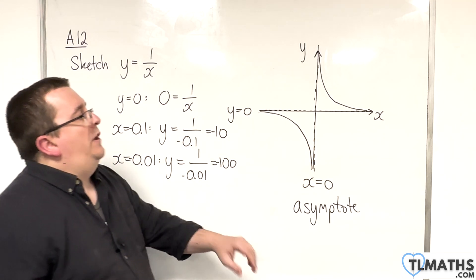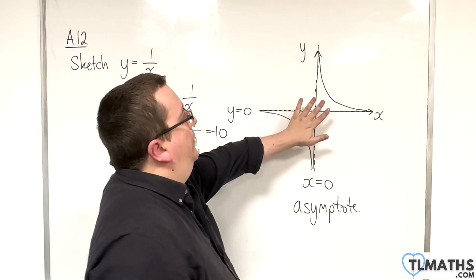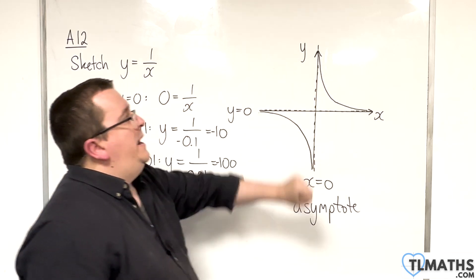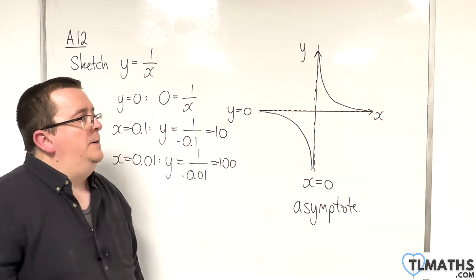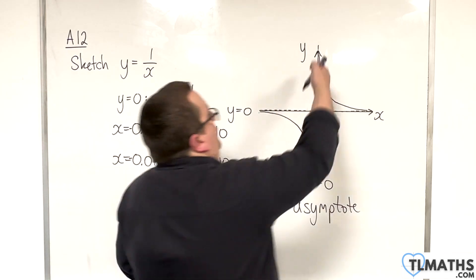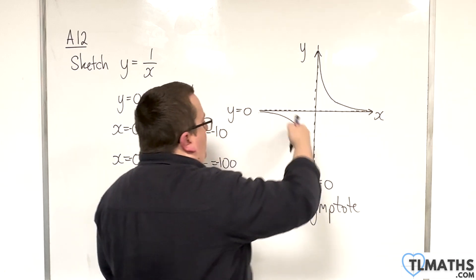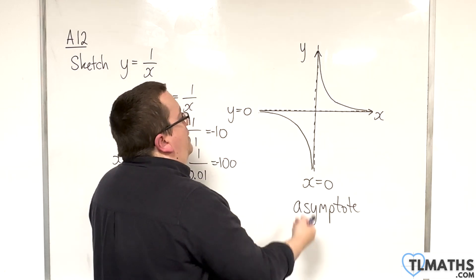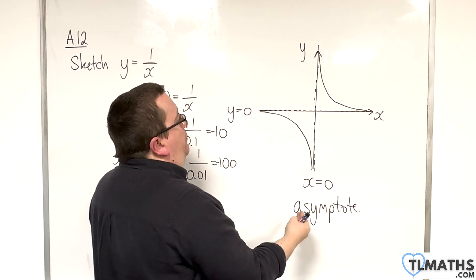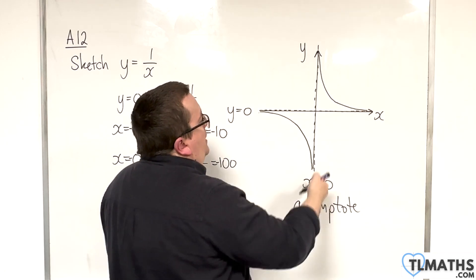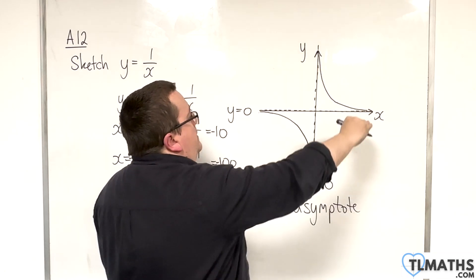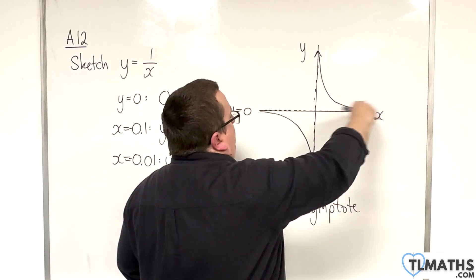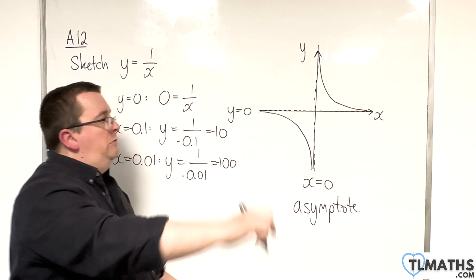So this is y equals 1 over x. You have this piece in the positive region and this piece in the negative region. There are two asymptotes: the y-axis at x equals 0, and the x-axis at y equals 0.